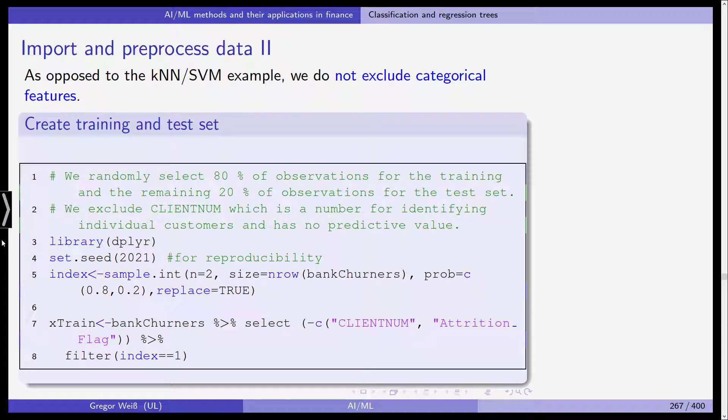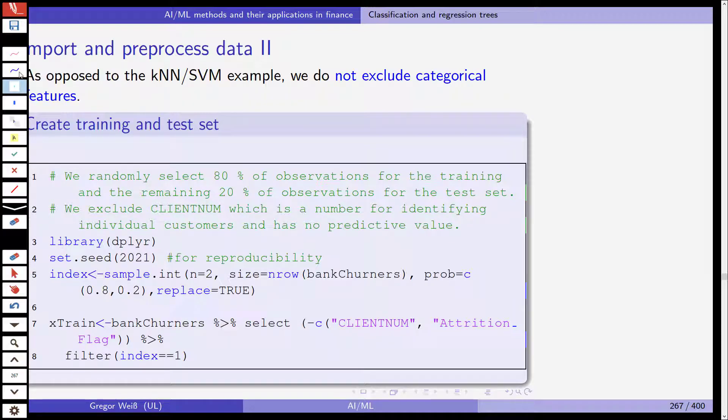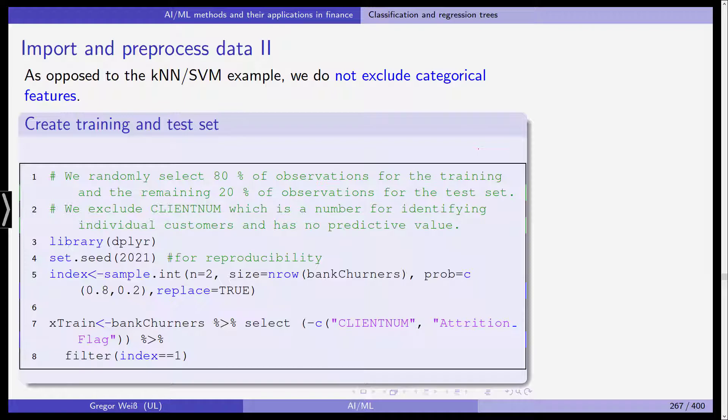Opposed to the k-nearest neighbor and the SVM example, we do not exclude categorical features. We can actually work with them here. We create the training set and the test set. We randomly select 80% of the observations for the training set and the remaining 20% are included in the test set.